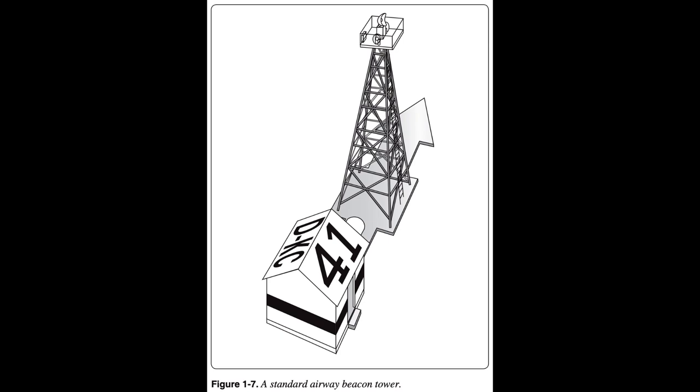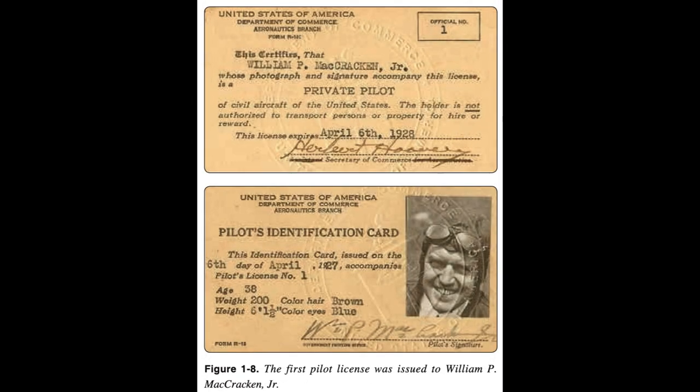Federal Certification of Pilots and Mechanics. The Aeronautics branch of the Department of Commerce began pilot certification with the first license issued on April 6, 1927. The recipient was the chief of the Aeronautics branch, William P. McCracken Jr. Orville Wright, who was no longer an active flyer, had declined the honor. McCracken's license was the first issued to a pilot by a civilian agency of the federal government. Some three months later, the Aeronautics branch issued the first federal aircraft mechanic license.